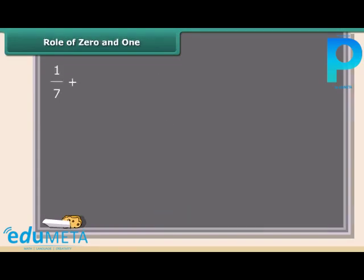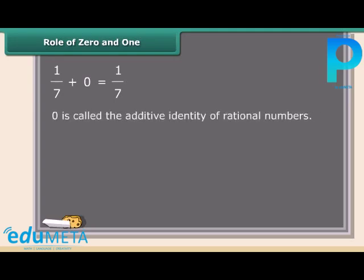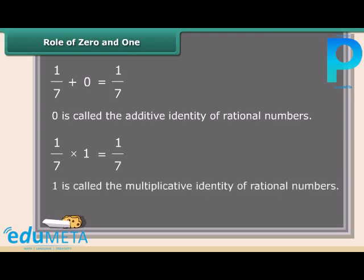Here we have added 0 to a rational number. What did you notice? When we add 0 to a rational number, the sum is always again that rational number. For this reason, 0 is called the additive identity of rational numbers. Now check it out: the multiplication of a rational number with 1. When we multiply a rational number with 1, the product is always again that rational number. For this reason, 1 is called the multiplicative identity of rational numbers.